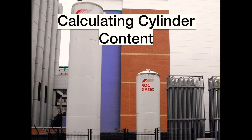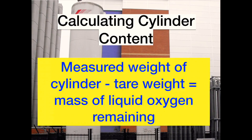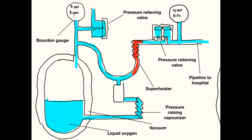The amount of oxygen remaining in the VIE is calculated from its mass. The mass of the empty cylinder, also known as the tare weight, is subtracted from the measured weight of the cylinder, with the difference being the mass of liquid oxygen remaining.